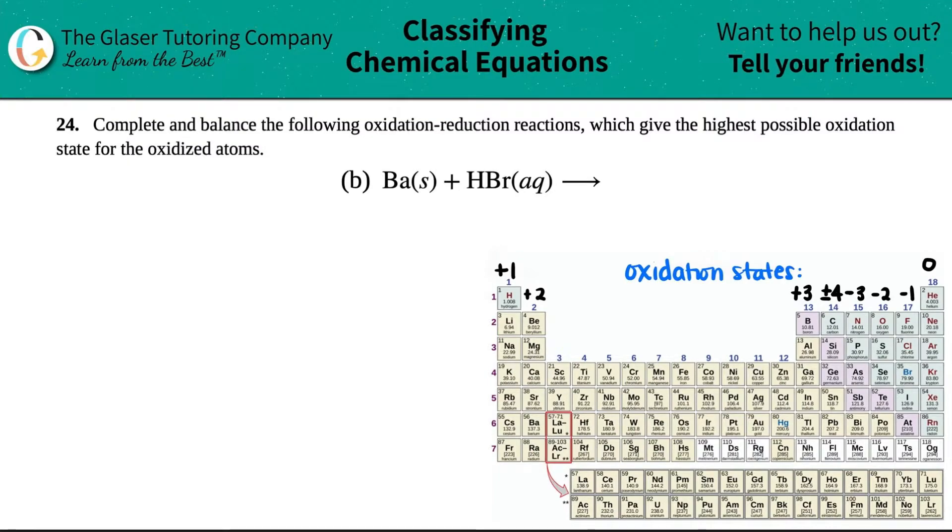Number 24, complete and balance the following oxidation reduction reactions, which give the highest possible oxidation state for the oxidized atoms. And then we have letter B. So in this case, we're mixing together barium, which is a solid, it's a metal, plus a hydrobromic acid, which is aqueous.